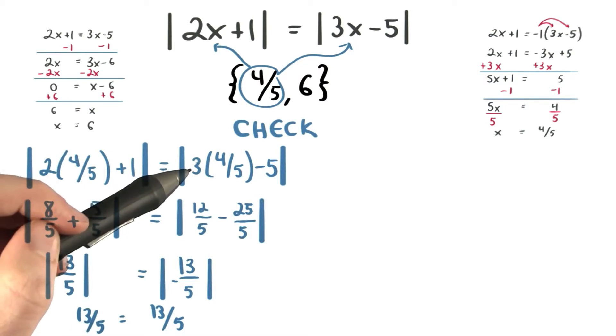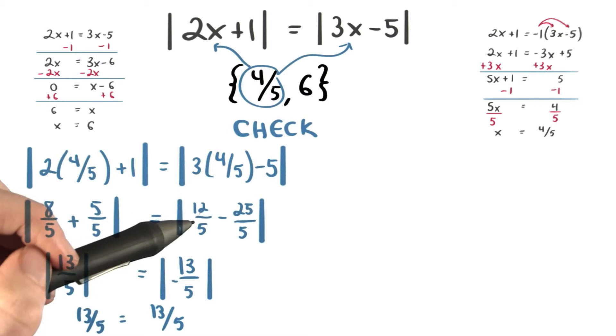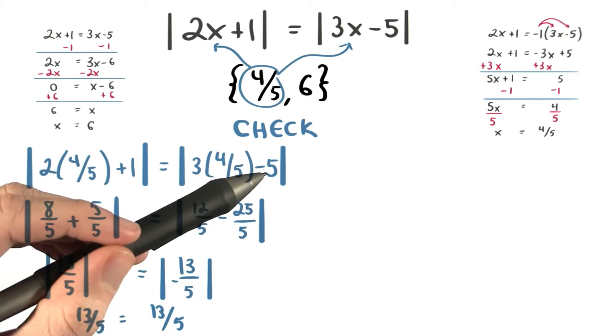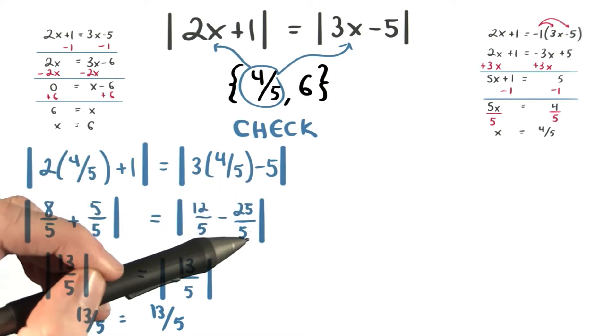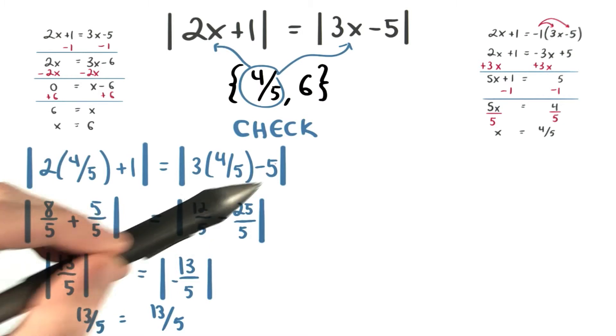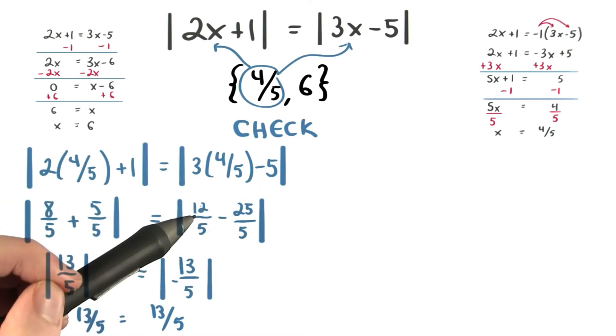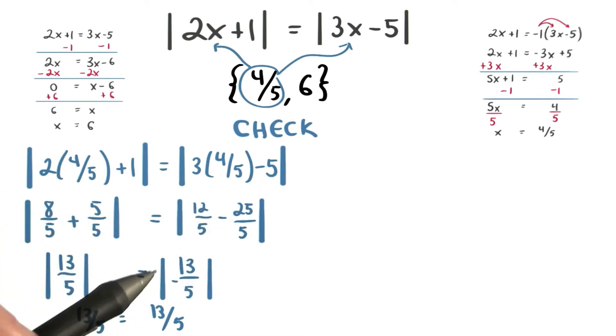For the right hand side, I'll have 3 times 4 fifths, which is 12 fifths. And then I'm going to change negative 5 into negative 25 fifths. This term is still really negative 5. I subtract my fractions and I get negative 13 fifths, or the absolute value of negative 13 fifths. The absolute value is always positive, so 13 fifths is equal to 13 fifths. So yes, this checks.